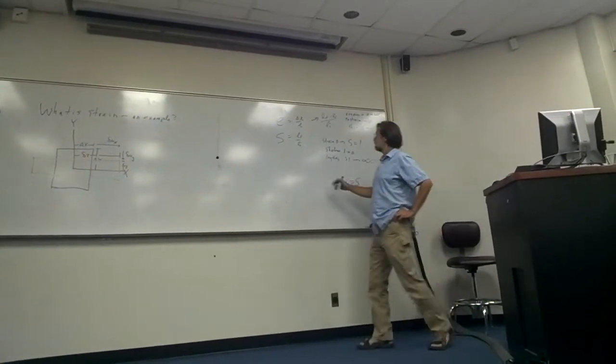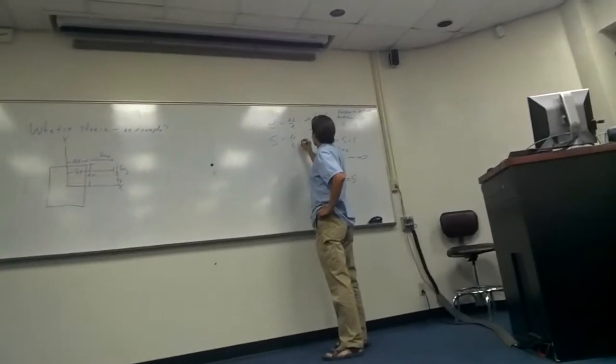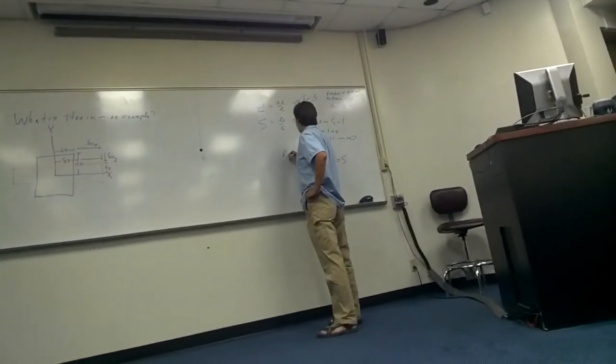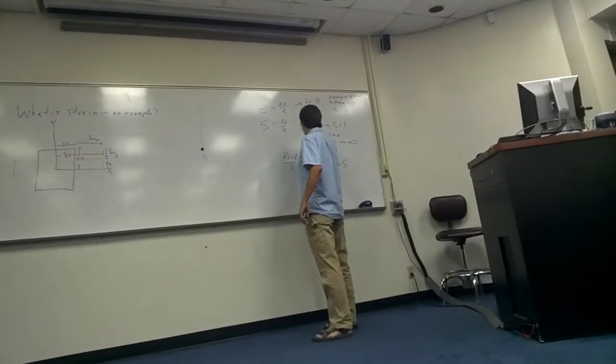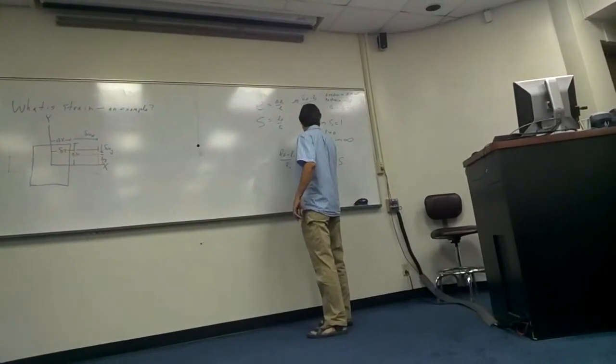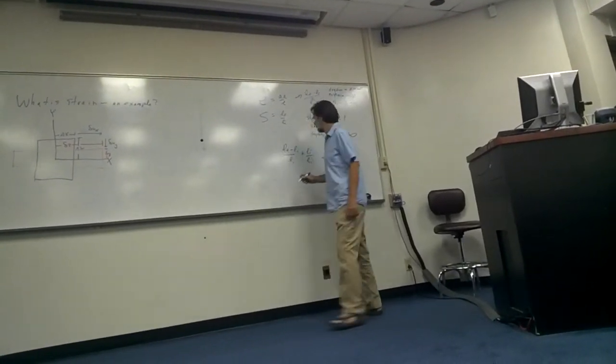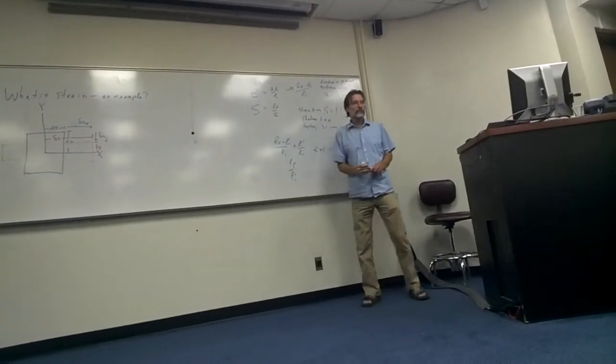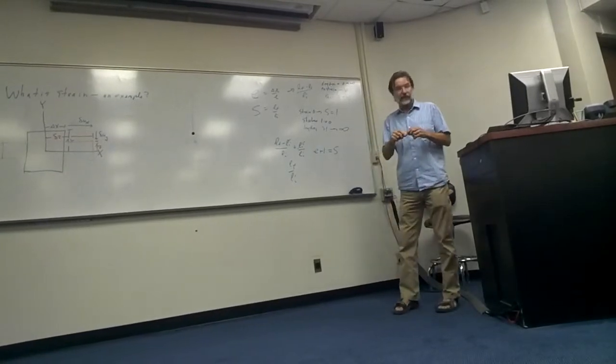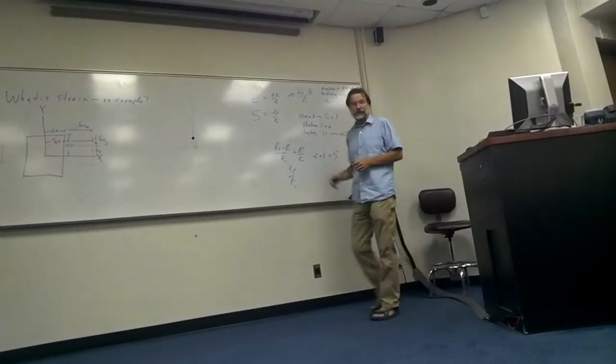See why is that? Well that's not too hard. You add 1 to LF minus LI over LI. If you add LI over LI to that, then that cancels, giving you LF over LI. And they're related to each other that way.